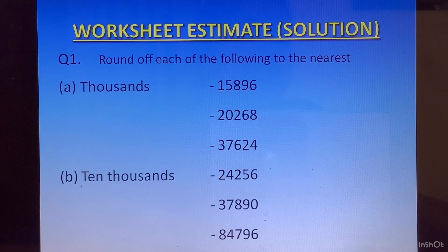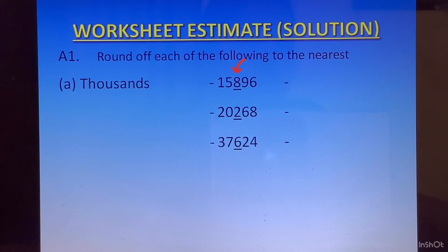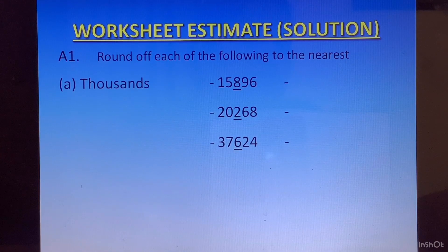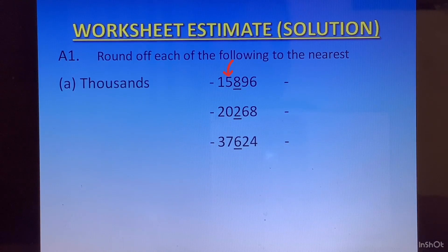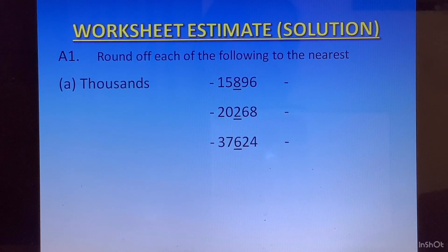To round off to the nearest thousands, we will look at the digit at the hundreds place. We have 8, 2, and 6 at the hundreds place. We will compare these digits with 5. If it is greater than 5, we will add 1 to the digit at the thousands place. If it is less than 5, we will not add anything. After we have done this, we will convert all the digits after the thousands place — that is the tens and hundreds place — to 0.